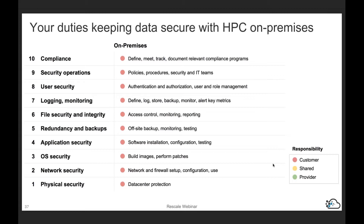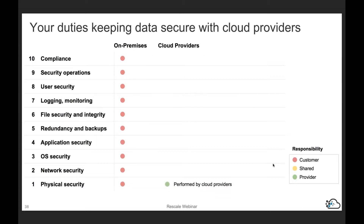How would this look differently if you were to move to the cloud? Physical security is probably the best here — it's directly handled by cloud providers, so you don't have to worry about it. For network security, cloud providers provide the enforcement mechanisms for firewalls, but it is up to you to configure access control correctly. For operating system security, cloud providers usually provide known-good golden images, though you can build your own — in both cases, you have to perform your own patches. For application security, because this is HPC-specific, you still need to perform your own software installation, configure it, and test it; the cloud provider will not do anything in this case.